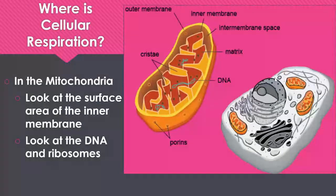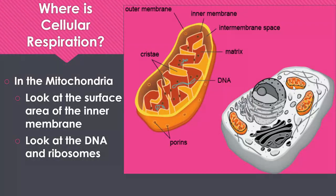Where does it happen? Cellular respiration takes place in an organelle called the mitochondria. You might have heard the mitochondria referred to as the powerhouse of the cell or the mighty mitochondria, and that's because it does produce that ATP energy. You can see this is a mitochondria — you can see how they are in comparison to the rest of the size of an animal cell. They are much smaller than an animal cell, but they are pretty complex.